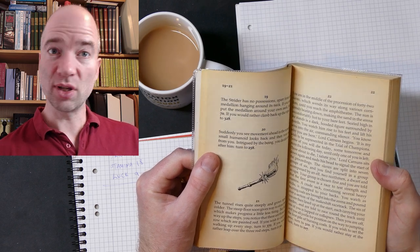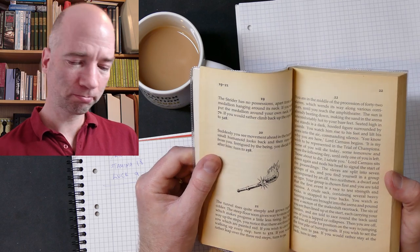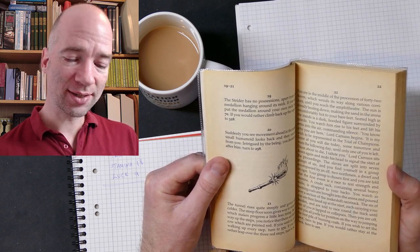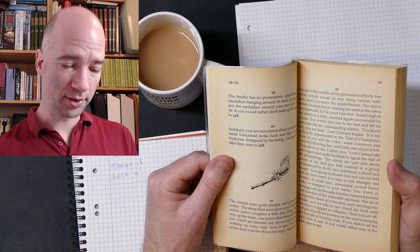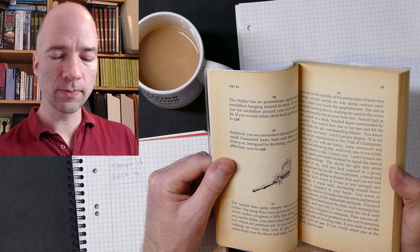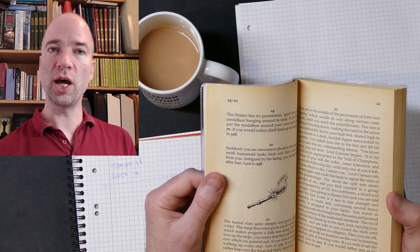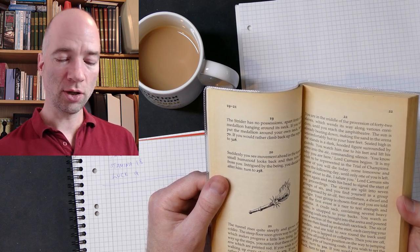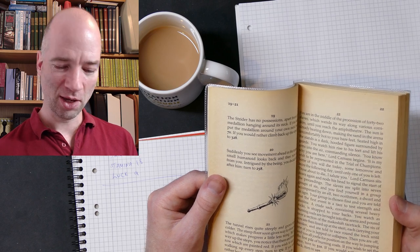The soup is thick with chicken and vegetables and tastes delicious. You devour it greedily and mop up the last drops with the bread. You have not eaten well for a fortnight and now feel fit and ready for the coming ordeal. You are in the middle of the procession of 42 slaves. Which wends its way along various corridors until you reach the amphitheatre. The sun is already beating down, making the sand in the arena uncomfortably hot to your bare feet. Seated high in the stands is a dark, hooded figure, surrounded by guards. You watch him rise to his feet and lift his arms into the air, commanding silence. You know why you are here, Lord Karnas begins. It is my wish to be represented in the trial of champions.